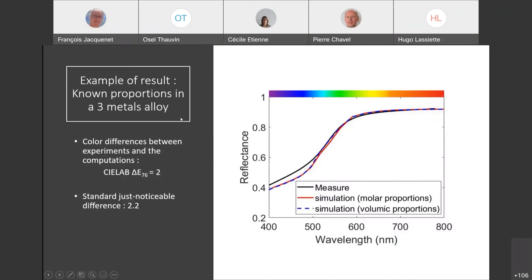This is an example of our results. The black curve is the measured spectral reflectance of three metal alloys, and the two others, the blue and red ones, are the simulations we obtained.